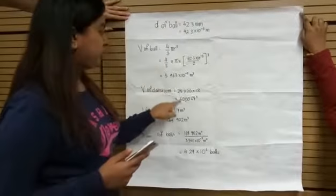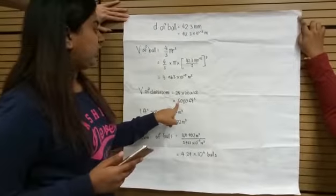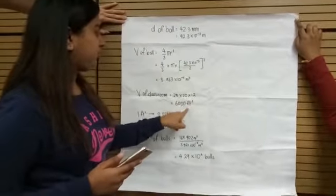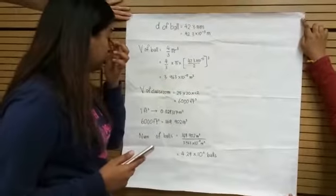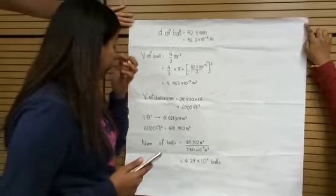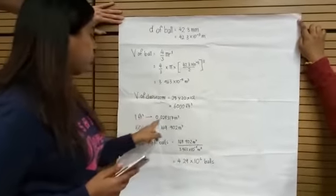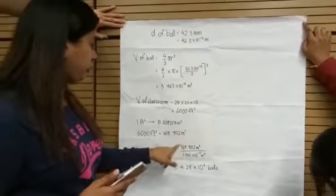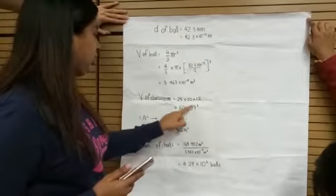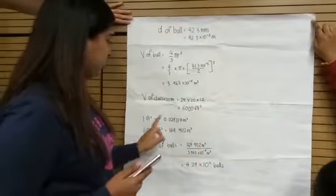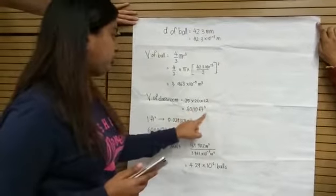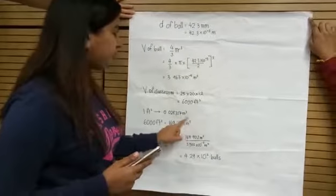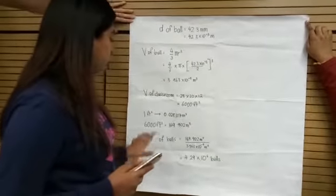The volume of the classroom is given in feet cubed. One feet cubed is close to 0.0283 metres cubed, so we multiply by 6,000 feet cubed to get the classroom volume in metres cubed.